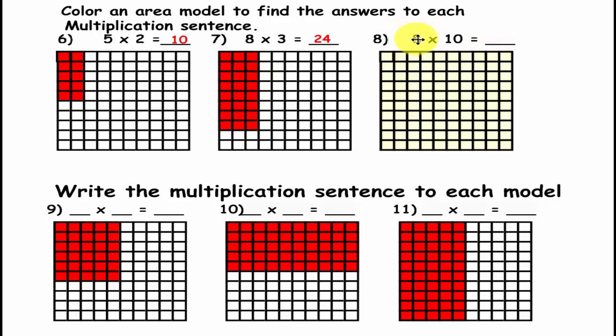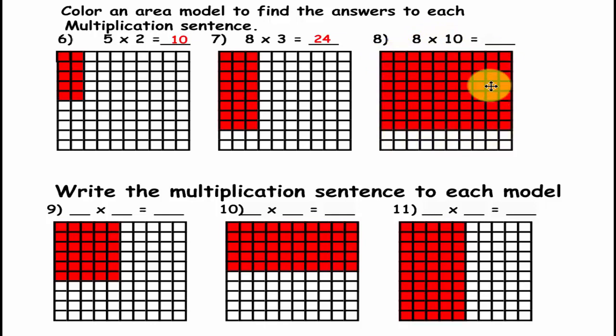Now the last one, we have 8 rows times 10 columns. So if you colored that in, you have all of this, so 8 times 10 is 80. Hopefully you have got that part correct.